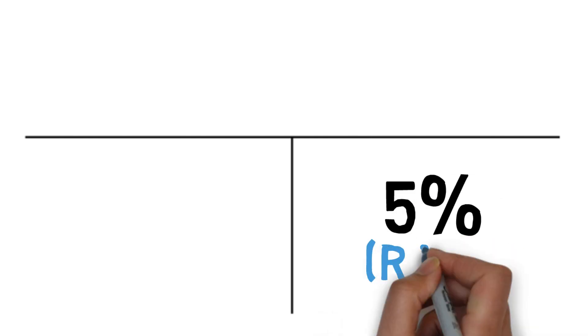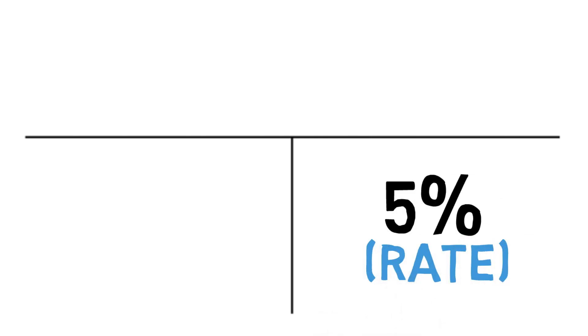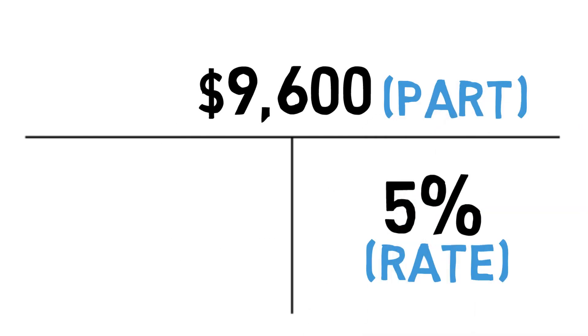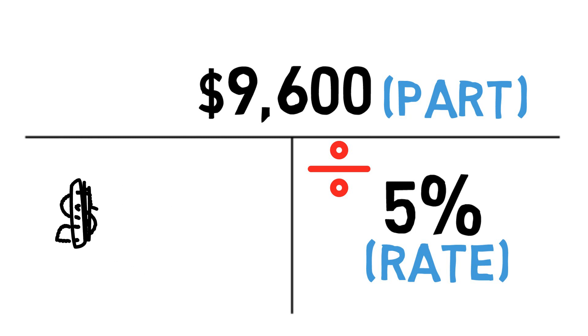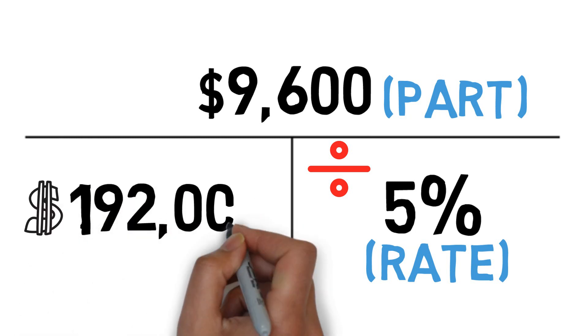We then go to our T formula. The interest rate on the loan was 5%, and the percentage always goes in the bottom right. So 5% goes in the bottom right of our first T. The $9,600 in annual interest paid will be a smaller number in relationship to the loan amount, so $9,600 goes on top. We take the top number and divide by the bottom number — $9,600 divided by 5% — giving us a loan amount of $192,000.